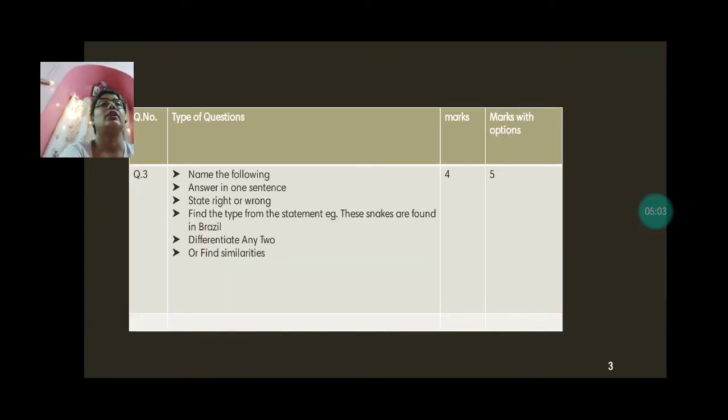Question 3 can be name the following. Again 4. So it could be, there will be an option here. So name the following. So there will be 5, you have to name any 1. Answer in 1 sentence, there will be 5. You have to answer any 4, not 1. Then state right or wrong. Now don't simply write true or false. Since they have mentioned right or wrong, please write right or wrong. I would advise you, write the statement and below that write right or wrong. Don't just write number and write numbers like 2 wrong, number 3 wrong. Write the statement. Don't write in front of it, write below it. Answer right. Answer wrong. In that order, that way.